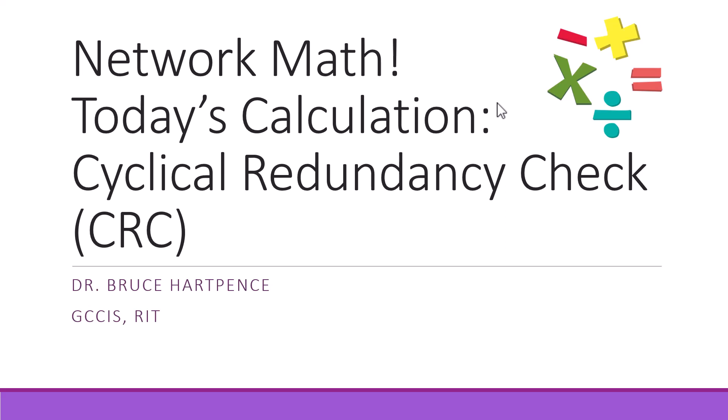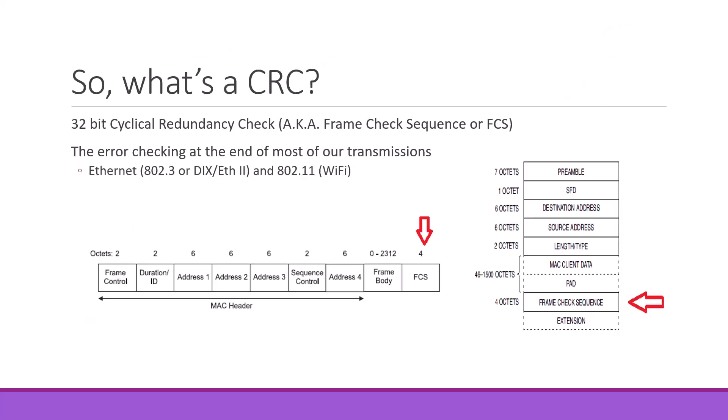Time now for another networking video. This time we're going to do something a little different — we're going to do some network math, and today's calculation is the Cyclical Redundancy Check, or CRC. So what is a CRC? It is a 32-bit Cyclical Redundancy Check, also known as the Frame Check Sequence.